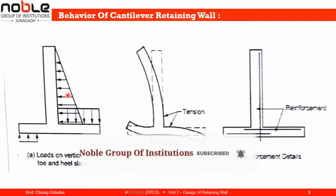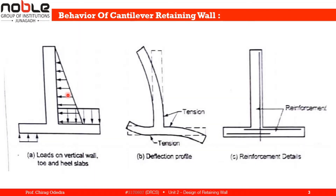There is a triangular load acting on the stem due to lateral earth pressure from the retained earth. There is also a load acting in the gravity direction due to the weight of the earth retained on the heel side. There is an upward load due to the cantilever action of the toe slab. Figure B shows the deflection profile.